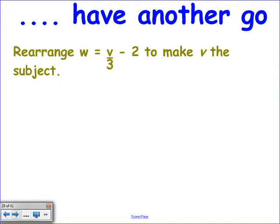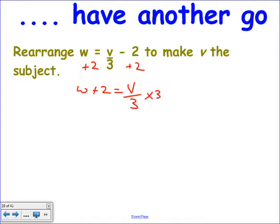Have a go at this one using the same process to make V the subject. What's the first step? You add 2 to both sides because it's a three-step equation. Then V over 3 means V divided by 3, so multiply both sides by 3. You've got to multiply everything on this side — so if you put what's on the right in brackets, when you multiply by 3 you go 3 brackets W plus 3.